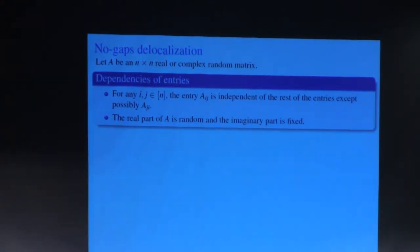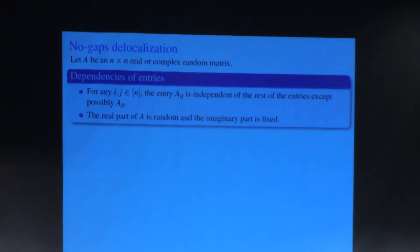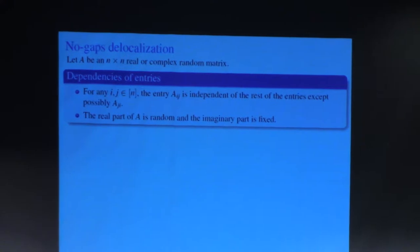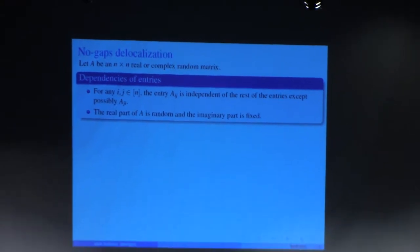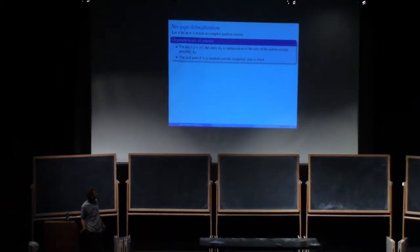We are striving for the maximally general formulation, so that the structure wouldn't matter. We assume that the entries of the matrix are almost independent, except that the entry A_IJ can depend on A_JI. This includes full independent matrices, Hermitian matrices, skew Hermitian matrices, etc.